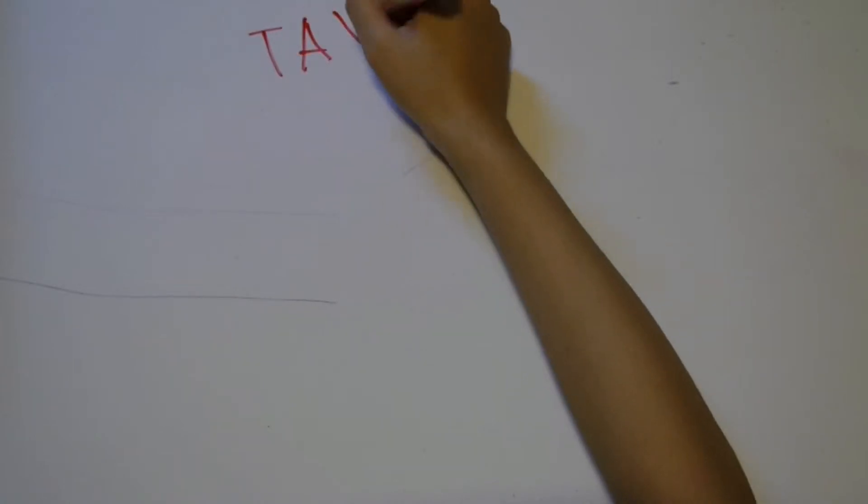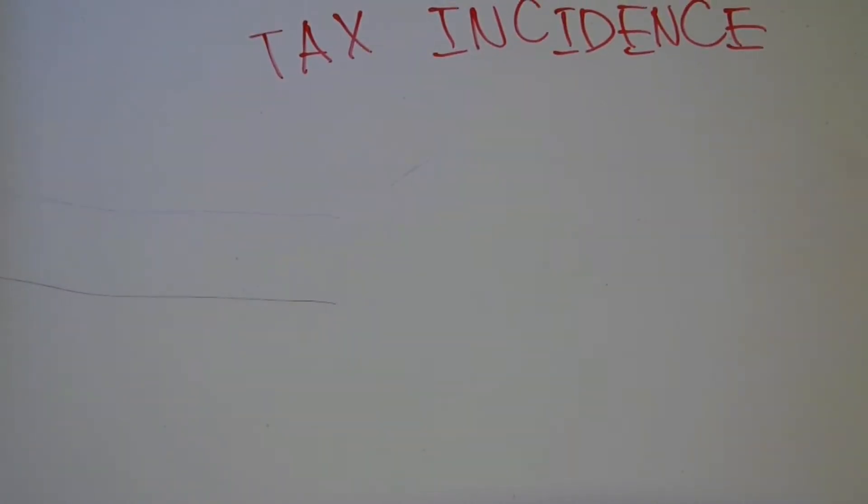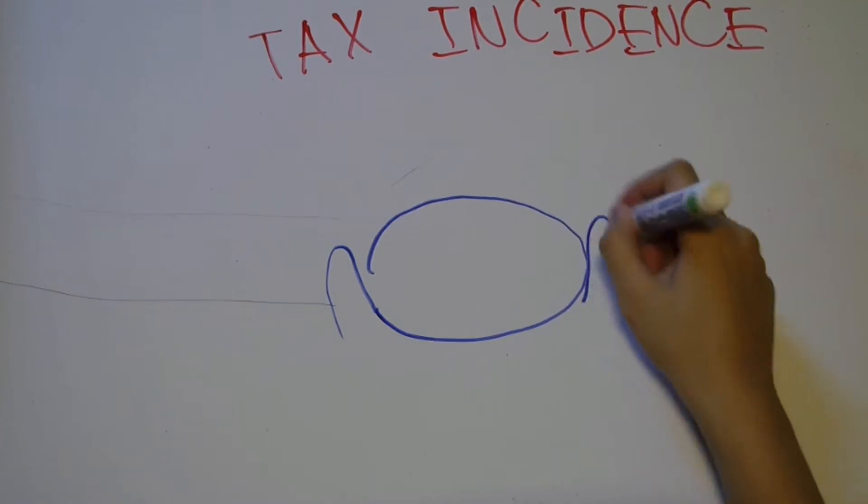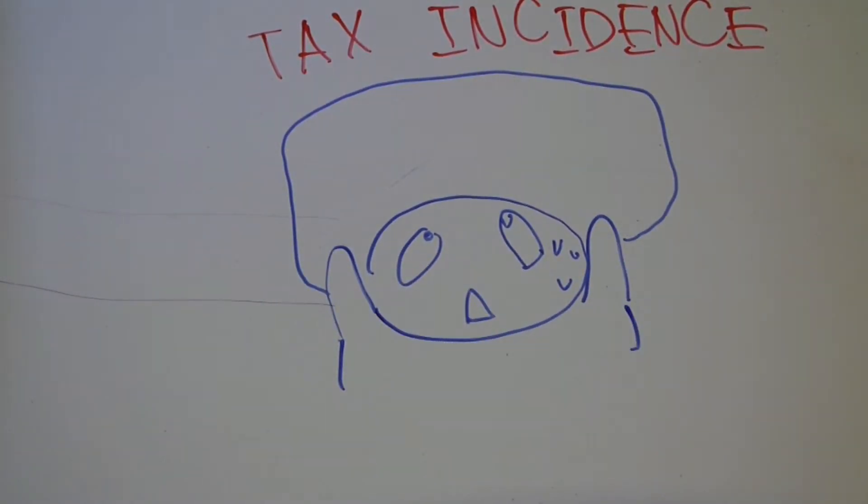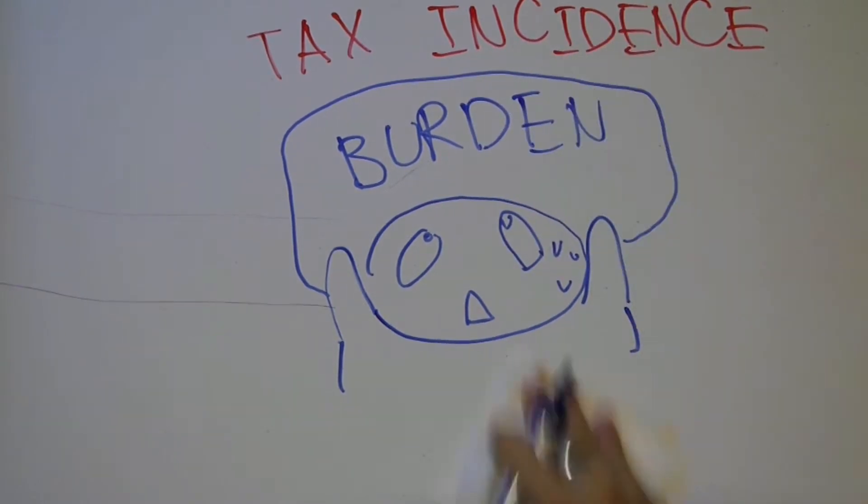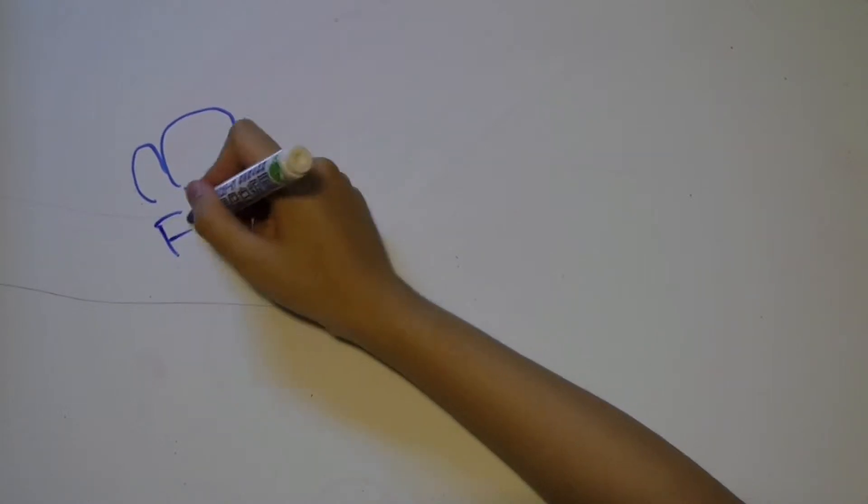Tax incidence is the burden of tax. When governments tax the firms for their carbon dioxide emissions, the firms, in order to earn profits, will have to raise their prices as well. Therefore, the burden of the tax is shared. Let's use Australia for example.